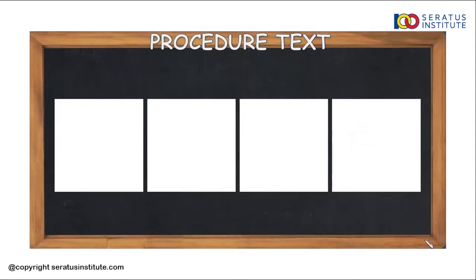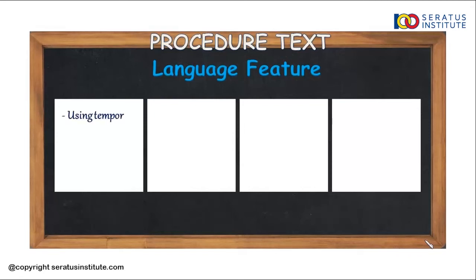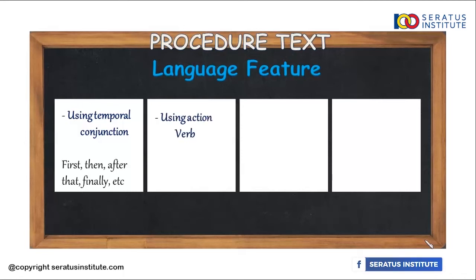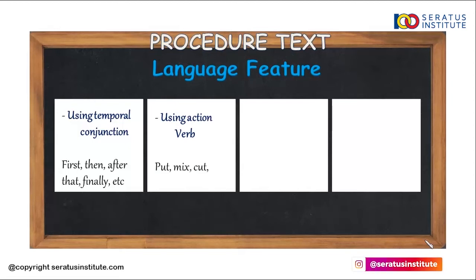The next is language feature. Language feature adalah unsur kebahasaan yang digunakan dalam suatu teks. In procedure text, the first feature is simple conjunction — kata hubung yang biasanya digunakan seperti first, then, after that, finally, and etc. The second is using action verb — atau kata kerja seperti put, mix, cut, plug-in, etc.